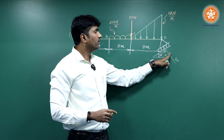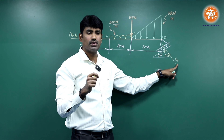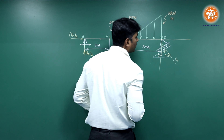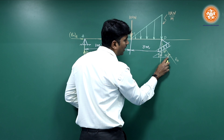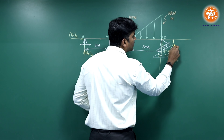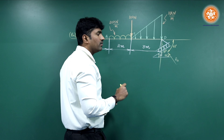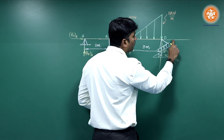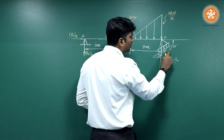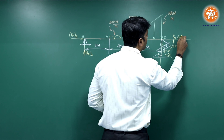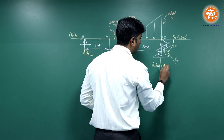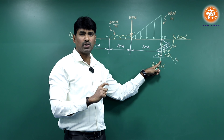Whenever a reaction or force is inclined, we need to resolve it into vertical and horizontal components. The angle is measured with respect to the horizontal to the incline, that is 60 degrees. Always remember: the direction from which the angle is measured gives the cosine component. So the horizontal component is Rd cos 60 degrees and the vertical component is Rd sin 60 degrees.